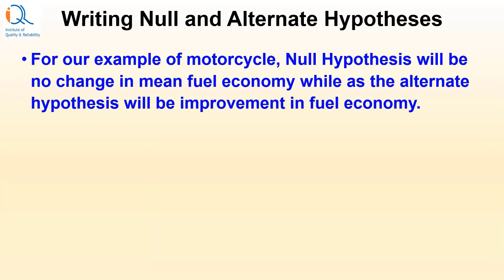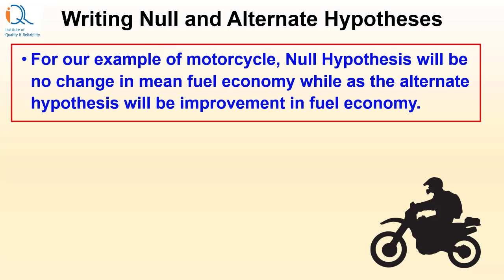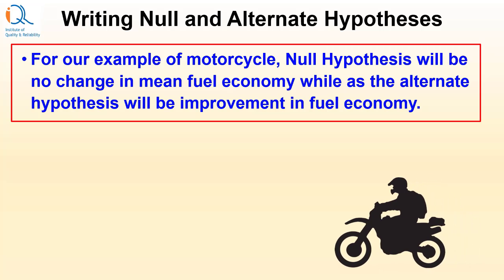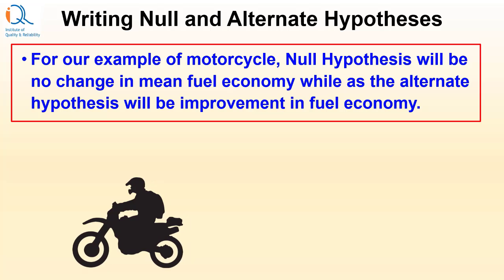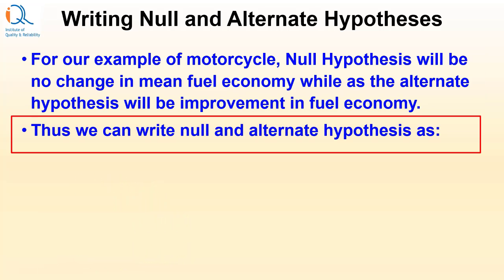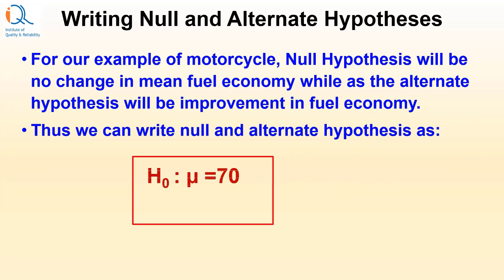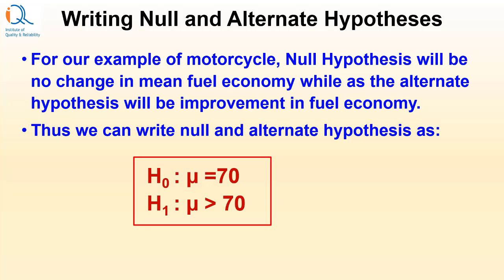Writing null and alternate hypothesis for our motorcycle example: the null hypothesis will be no change in mean fuel economy, while the alternate hypothesis will be improvement in fuel economy. Thus, we can write: H0: mu = 70, which is the historical mean, also written as mu0 = 70. And H1: mu > 70. Why greater than? Because we want to assess the claim that the new model of motorcycle gives a better fuel economy.